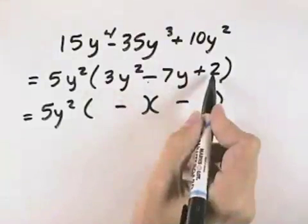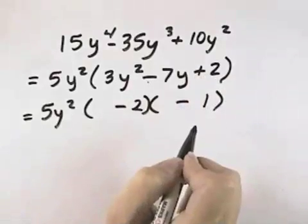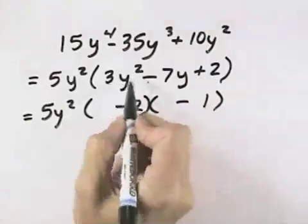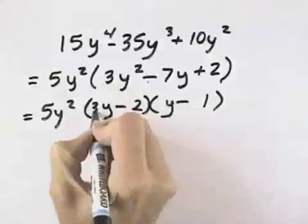Now we know to get a 2 on the last term, we have to have a 2 and a 1, although we could reverse it and make it a 1 and a 2. Then what we have is 3y squared, so we know we need a y in each space, and then a 3 and a 1.